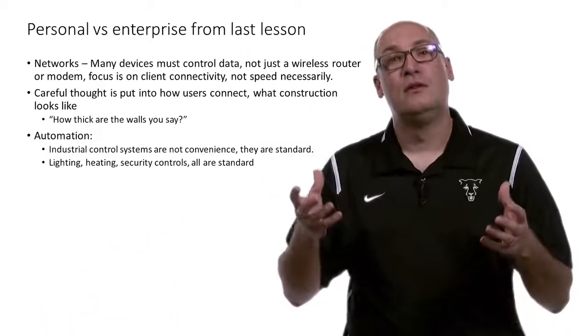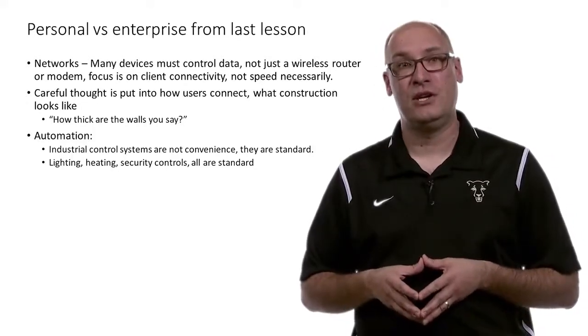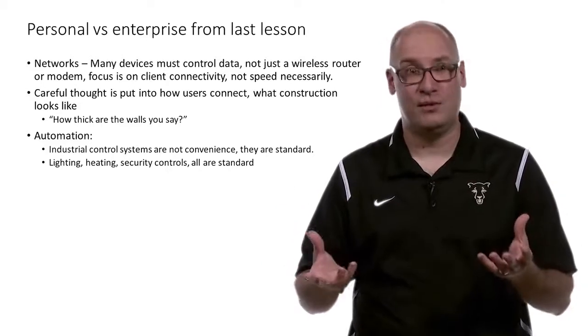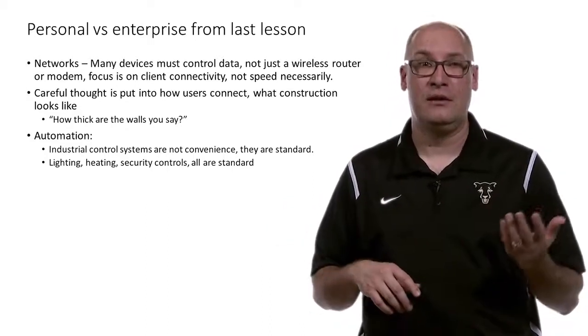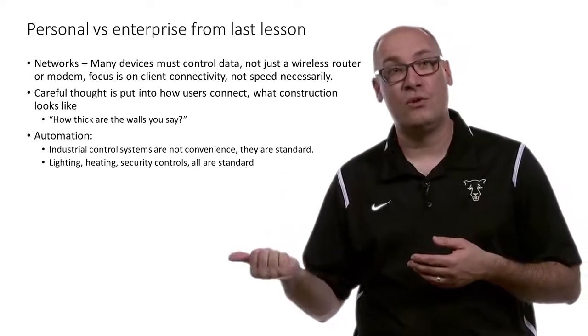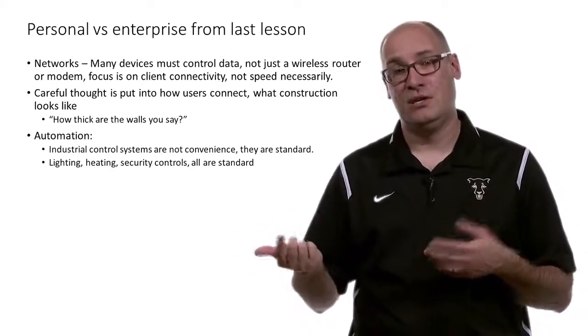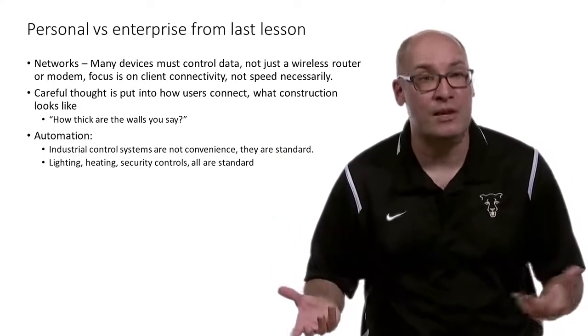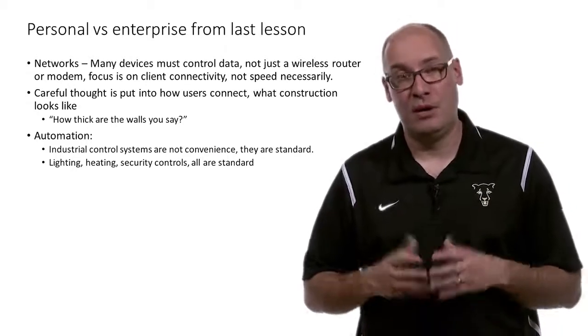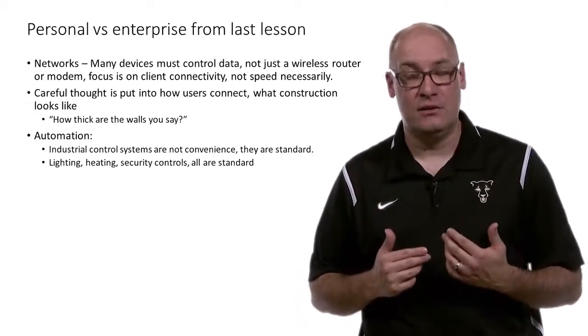The last topic is automation. Industrial control systems — such as setpoint systems — control the HVAC in a building: heating, ventilation, and air conditioning. Heating controls and lighting are all operated by computers to drive down costs. If a building isn't being used on the weekend, do you want to heat it to 72 degrees? Probably not — maybe drop it to 65. Security controls are another big concern, where you might spend thousands of dollars on building security compared to just a hundred dollars at home.